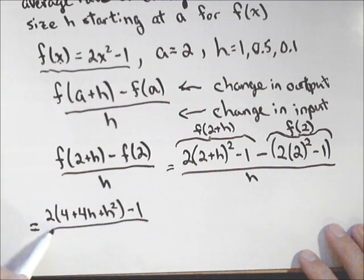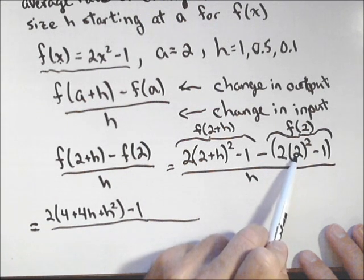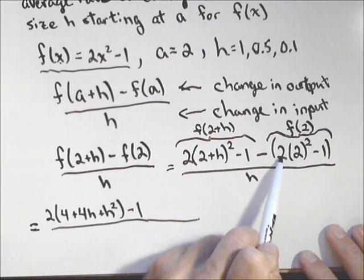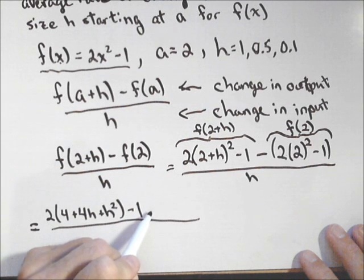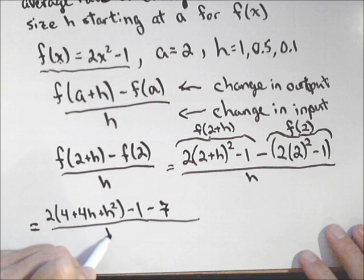Minus 1. And then here, we have 2 squared, which is 4, times 2, which is 8, minus 1, which is 7. So, minus 7 at the end. All over h.